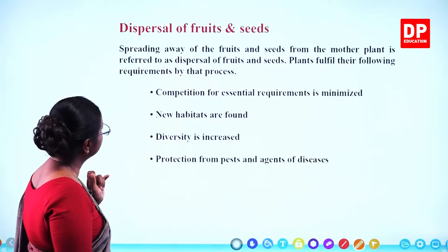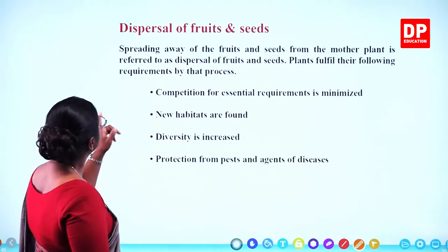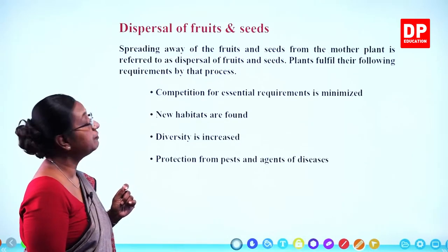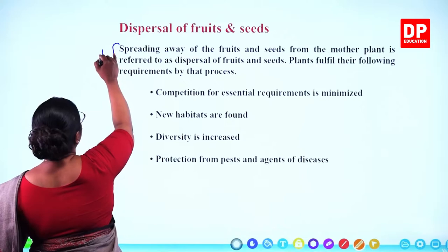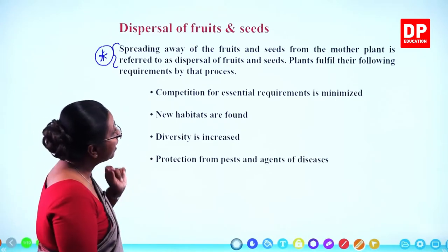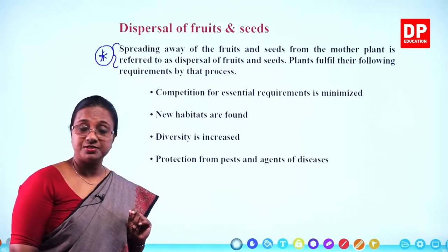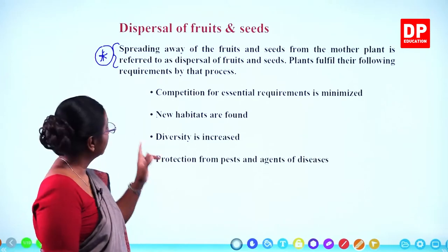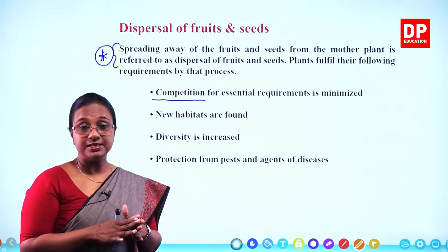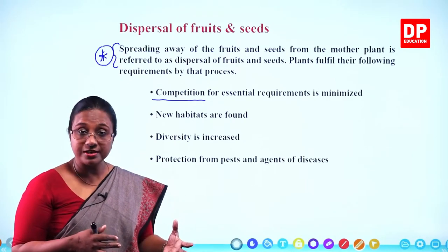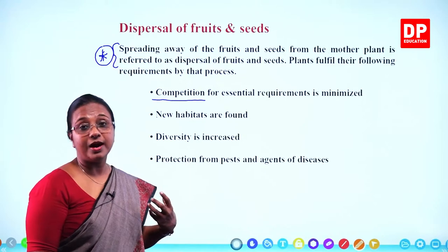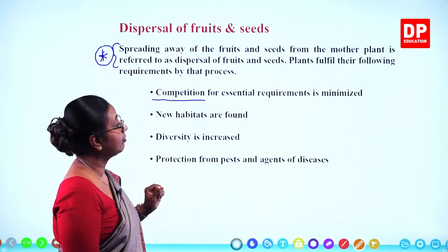Spreading away of the fruits and seeds from the mother plant is referred to as dispersal of fruits and seeds. Plants fulfill several requirements through this process. The first reason is competition — if they all grow under the same plant, space will be limited, and there will be competition for water, nutrients, and sunlight. Competition for essential requirements is minimized when seeds disperse farther from the mother plant.